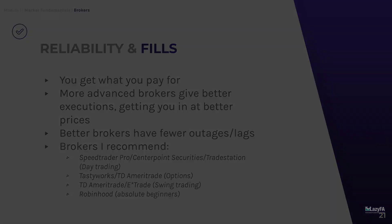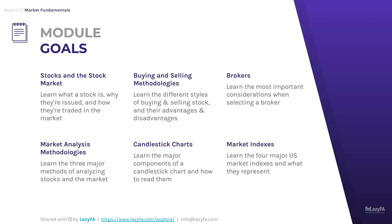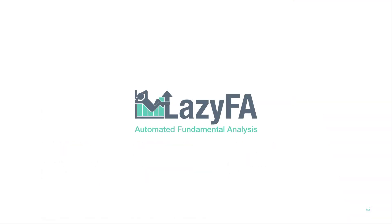That wraps up the first three pieces of market fundamentals: stocks and the stock market, buying and selling methodologies, and choosing a broker. Next time we're going to cover market analysis methodology — technical, fundamental, and hybrid analysis — the major components of a candlestick chart and how to read them, and the four major U.S. market indexes. If you're watching this after the fact and don't want to miss that video, hit the subscribe button, turn on your notifications, like, leave a comment, and I will see you next time.